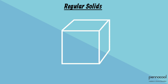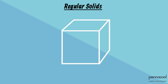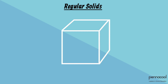We can describe solids based on the number of faces, edges, and vertices. A face is a flat surface on the solid. Edges are where two faces meet, while vertices are where two edges meet.